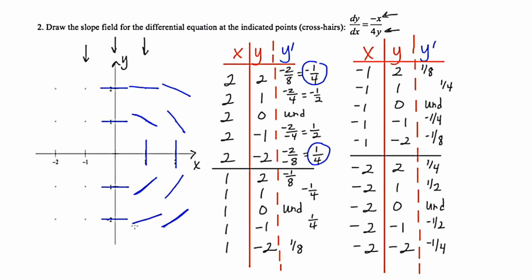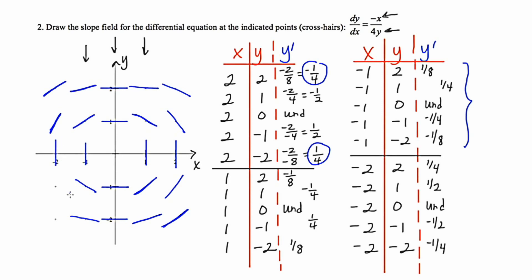Moving to the next column, starting with (-1, 2): slope is 1 eighth — positive but not very steep. Then 1 fourth, then undefined, then negative 1 fourth, then negative 1 eighth. For our final cluster starting at (-2, 2): 1 fourth, then 1 half, then undefined, then negative 1 half, and then negative 1 fourth.